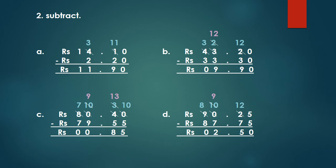Example B. Rupees 43.20 minus rupees 33.30. 0 minus 0 equals 0. 3 cannot subtract from 2, so we borrow. 3 becomes 2 and the 2 becomes 12. 12 minus 3 equals 9. Then 3 minus 3 equals 0. 4 becomes 3 and the 3 becomes... As a result, we get the answer rupees 9.90.